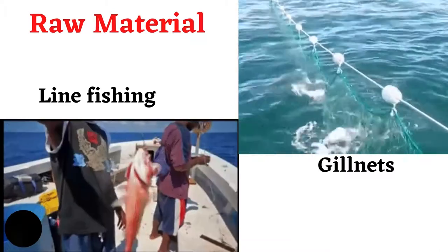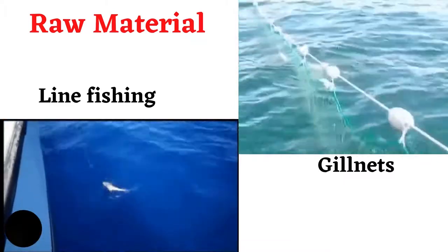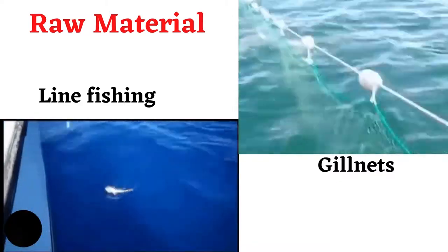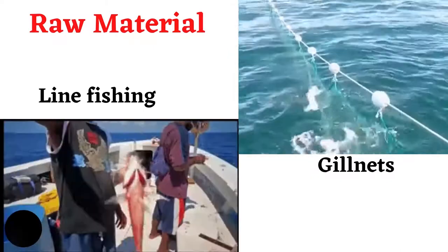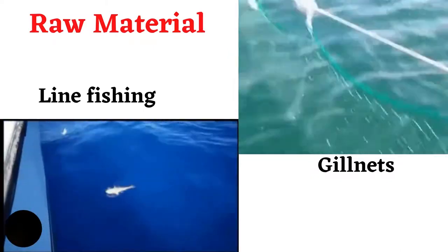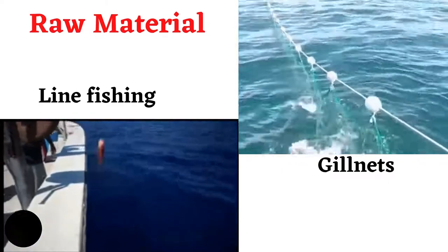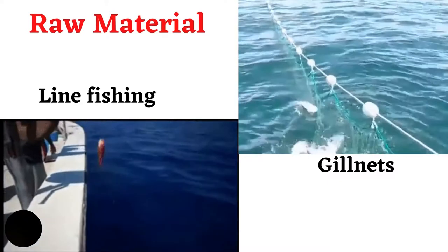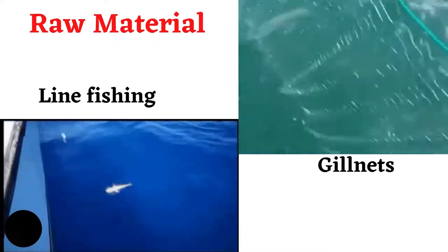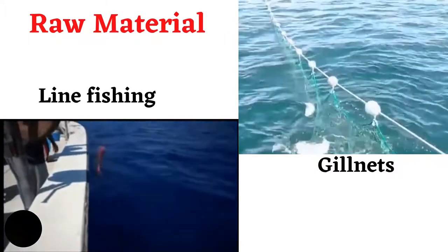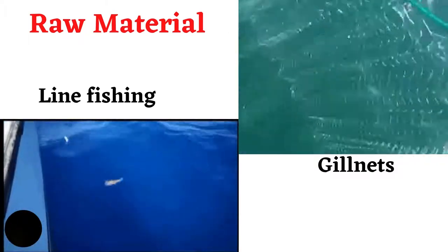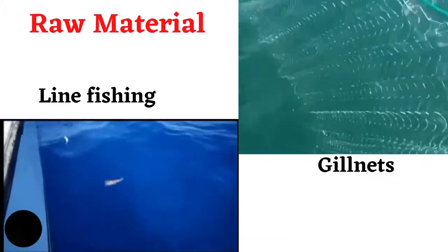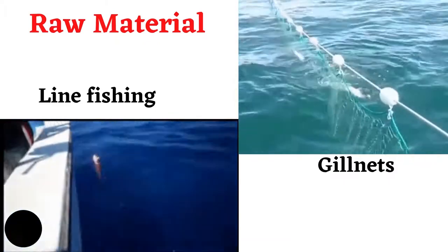Finfish are also traditionally caught using gillnets. A gillnet is designed to catch fish by allowing only their heads to get through a wall-like mesh, thereby entrapping them by the gills. However, gillnets trap everything, so that they end up killing both the targeted species as well as those that are not targeted. Thus, gillnets are now considered a dangerous fishing method.